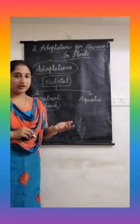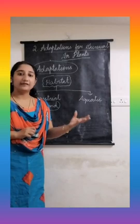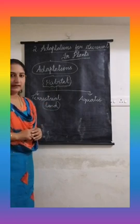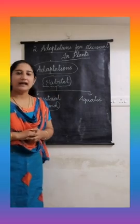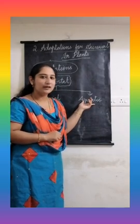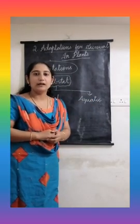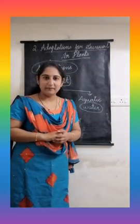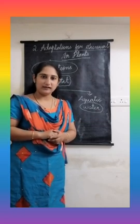Examples of terrestrial habitat are mango tree, banyan, tomato, brinjal, fruits, and all vegetables. The second type is aquatic habitat. Aquatic are the plants which grow in water. Examples of aquatic plants are lotus, water hyacinth, hydrilla, and water lily. So we saw what is adaptation, what is habitat, and what are the two types of habitat.